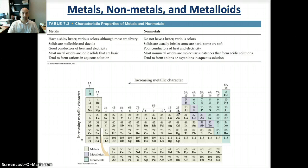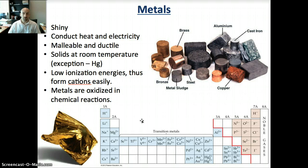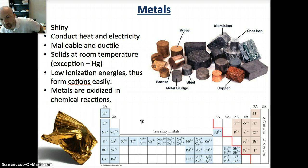The more an element exhibits the physical and chemical properties of metals, the greater the metallic character. Metals are shiny, they conduct heat and electricity, they're malleable and ductile, they're solids at room temperature, and they have low ionization energies — thus they form cations easily.